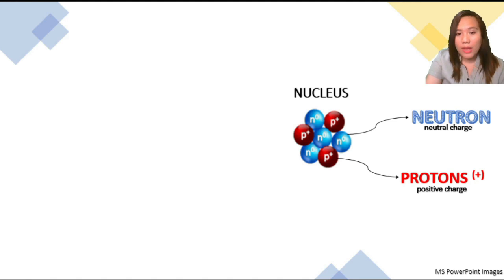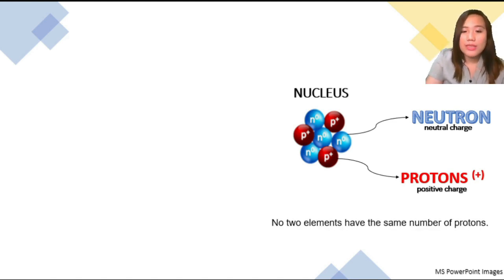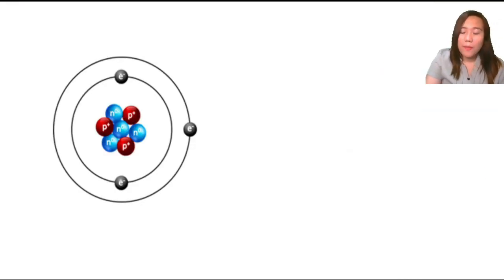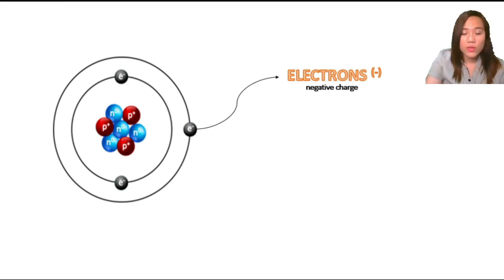Remember, no two elements have the same number of protons. Revolving around the nucleus, like the planets around the sun, are the electrons, or the negative charge particles of the atom.